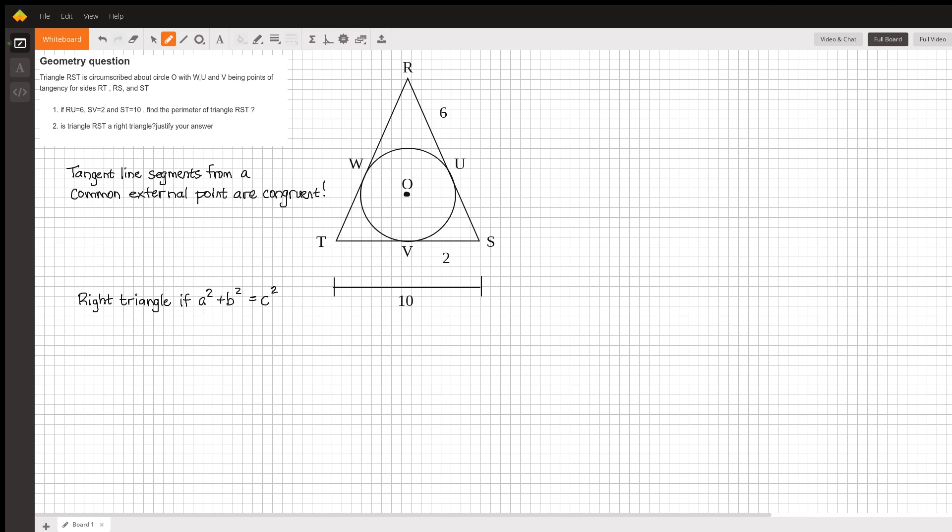They ask us to find the perimeter of this triangle, so we'll start out by making an important note that any time we have tangent line segments that come from a common external point, those line segments are congruent.